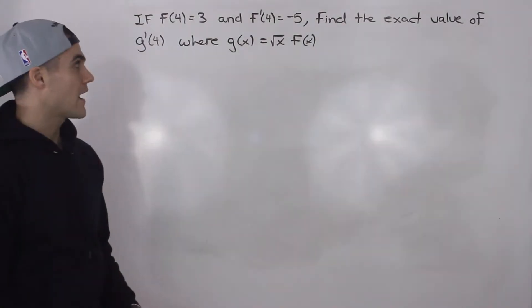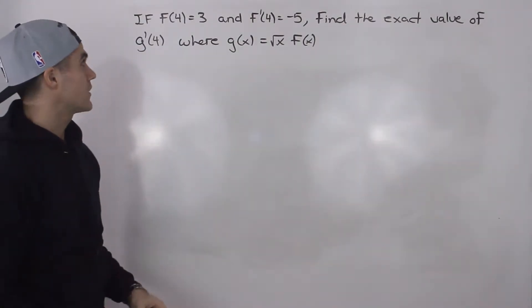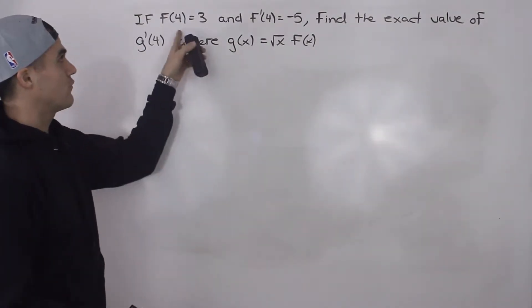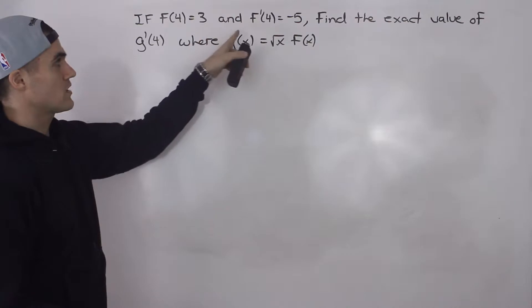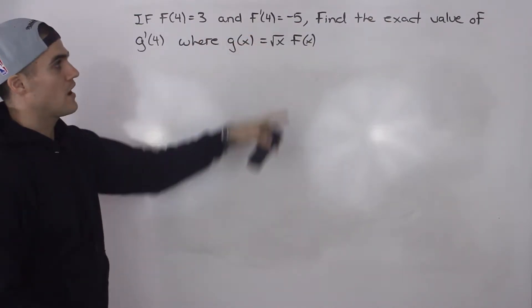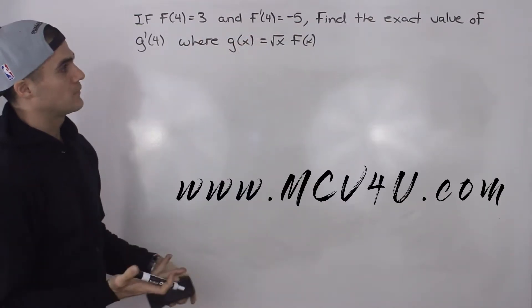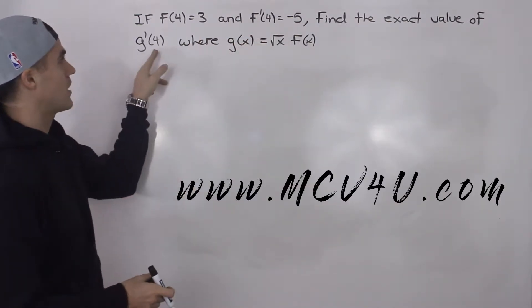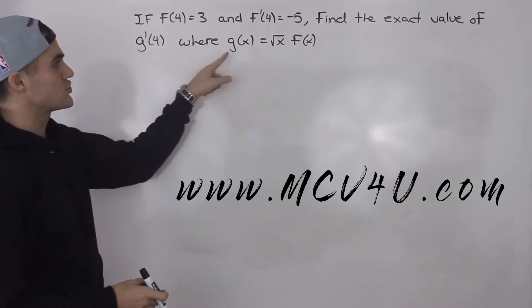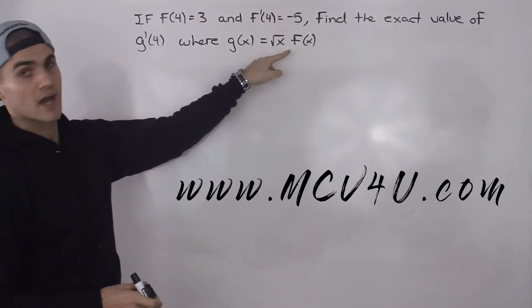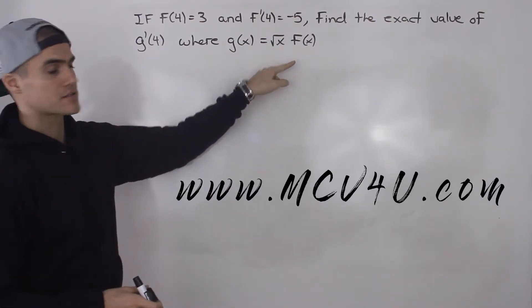What's up everybody, welcome back. In this question we're given f(4) = 3, f'(4) = -5, and we have to find the exact value of g'(4), where g(x) equals the square root of x times f(x).